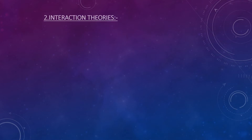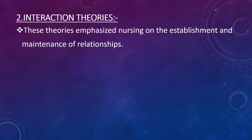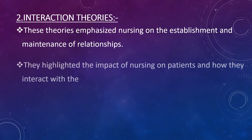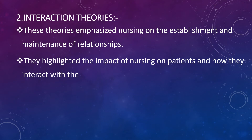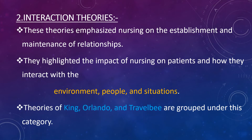Number two is interaction theories. These theories emphasized nursing on the establishment and maintenance of relationships. They highlighted the impact of nursing on patients and how they interact with the environment, people and situation. The theories of King, Orlando and Travelbee are grouped under this category.